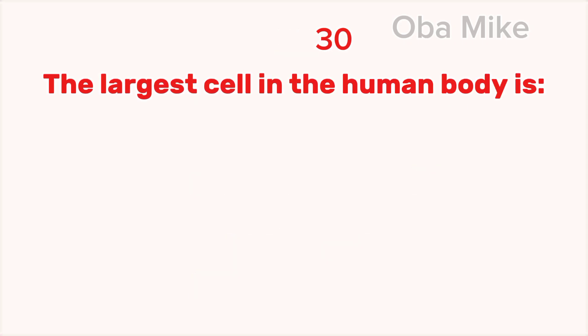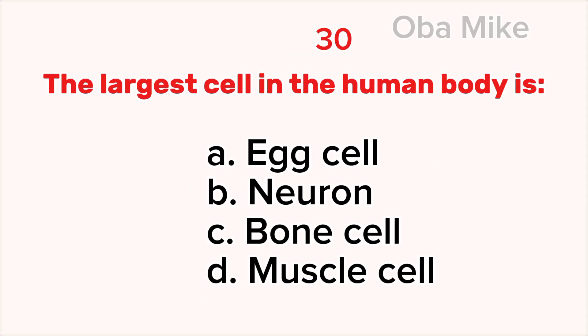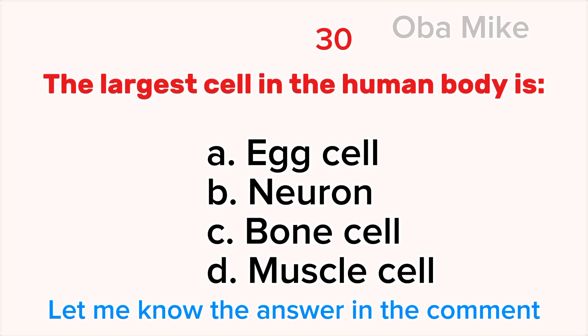30. The largest cell in the human body is A. Egg cell, B. Neuron, C. Bone cell, D. Muscle cell. Let me know the answer in the comments section.